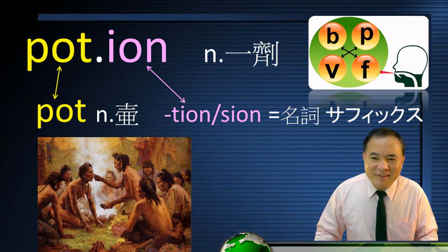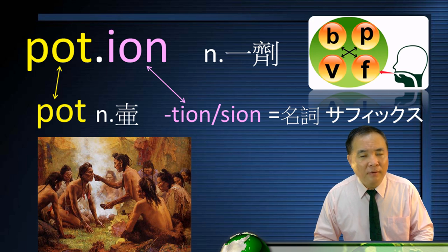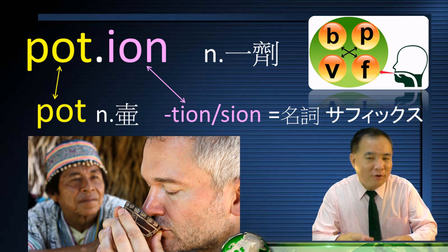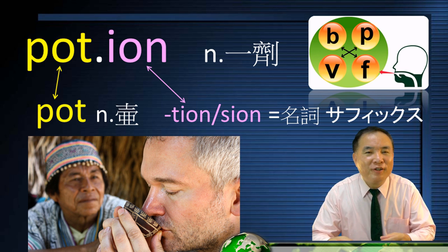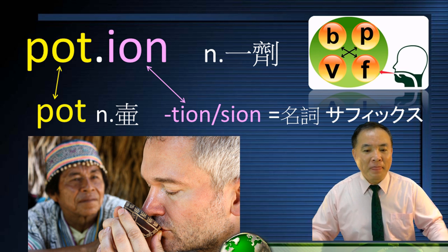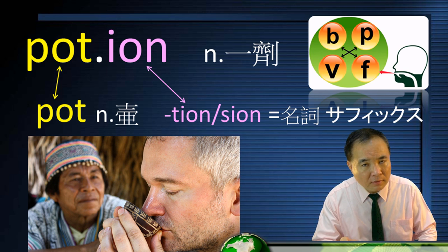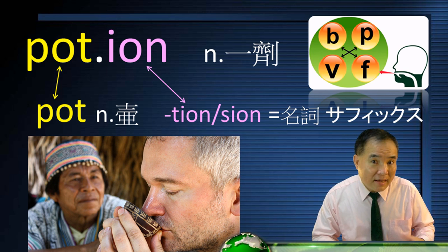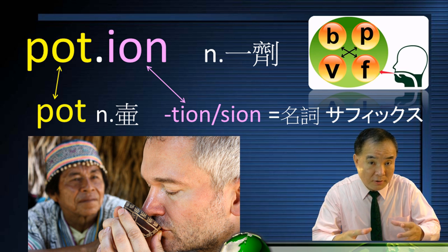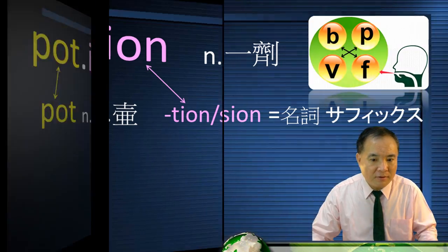In the past, a sick person would go to a witch doctor for medicine. The witch doctor would put medicine water in a pot for him to drink, so that he might get well. Now we call it a potion of medicine. P-O-T actually means pot, something to hold water. You put medicine in it, it becomes a potion of medicine.